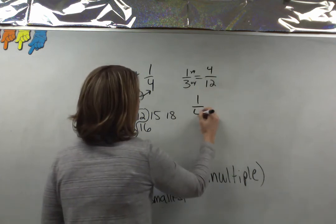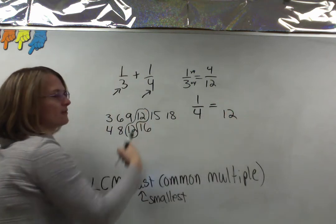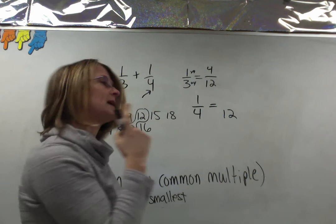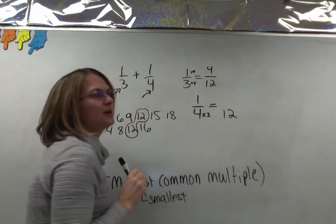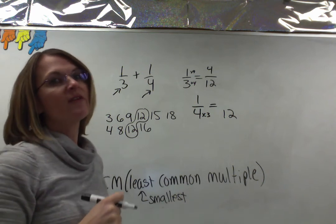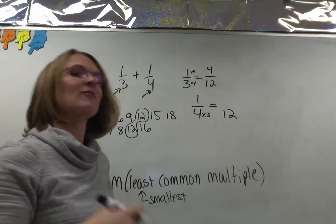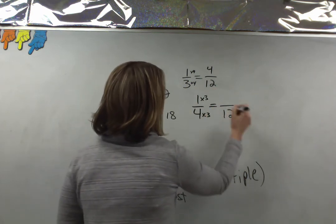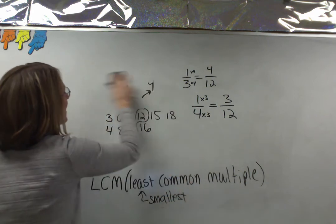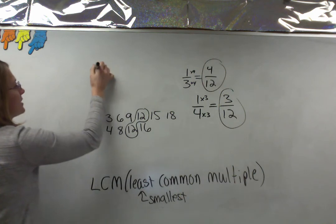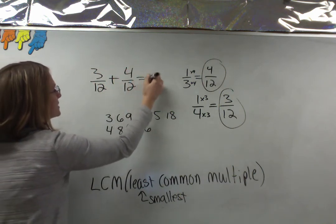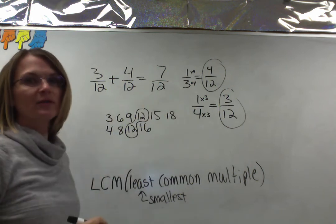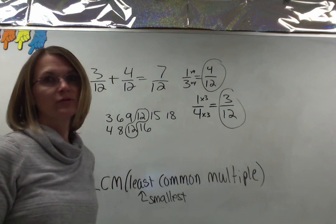Then I do the same for one-fourth. Four times what is 12? Four times three is 12, so I multiply the bottom by three and also multiply the top by three — one-fourth becomes three-twelfths. Now I can add them because they're the same size. Three-twelfths plus four-twelfths: add the numerators, three plus four is seven, and the denominator stays the same — seven-twelfths. We don't ever add the denominator, which is why we had to go through all the trouble of changing it.